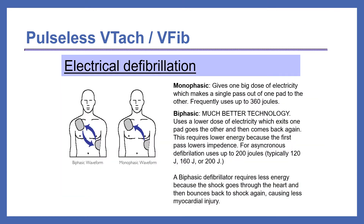In this diagram, you can see the difference between monophasic and biphasic defibrillation. Monophasic gives one big dose of electricity, making a single pass out of one pad to the other. Biphasic is much better technology — it uses a lower dose of electricity, which exits one pad, goes to the other, and then comes back again. This requires lower energy and causes less myocardial injury to the patient.